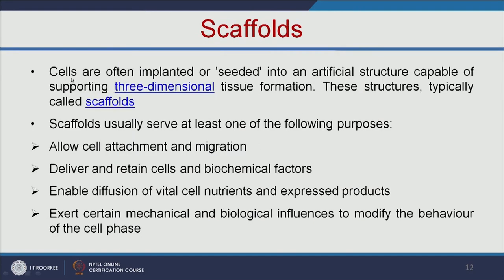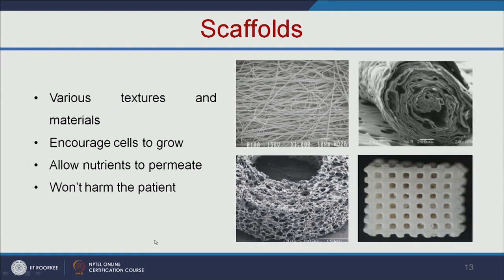Cells are often implanted or seeded into an artificial structure capable of supporting three-dimensional tissue formation — these structures are typically called scaffolds. The scaffold should allow cells to attach, deliver and retain cells and biochemical factors, enable diffusion of vital cell nutrients, and exert certain mechanical and biological influences to modify cell behavior. The scaffold should encourage cells to grow, have sufficient porous nature to allow nutrient permeation, and be highly biocompatible and biodegradable so it does not harm the patient.